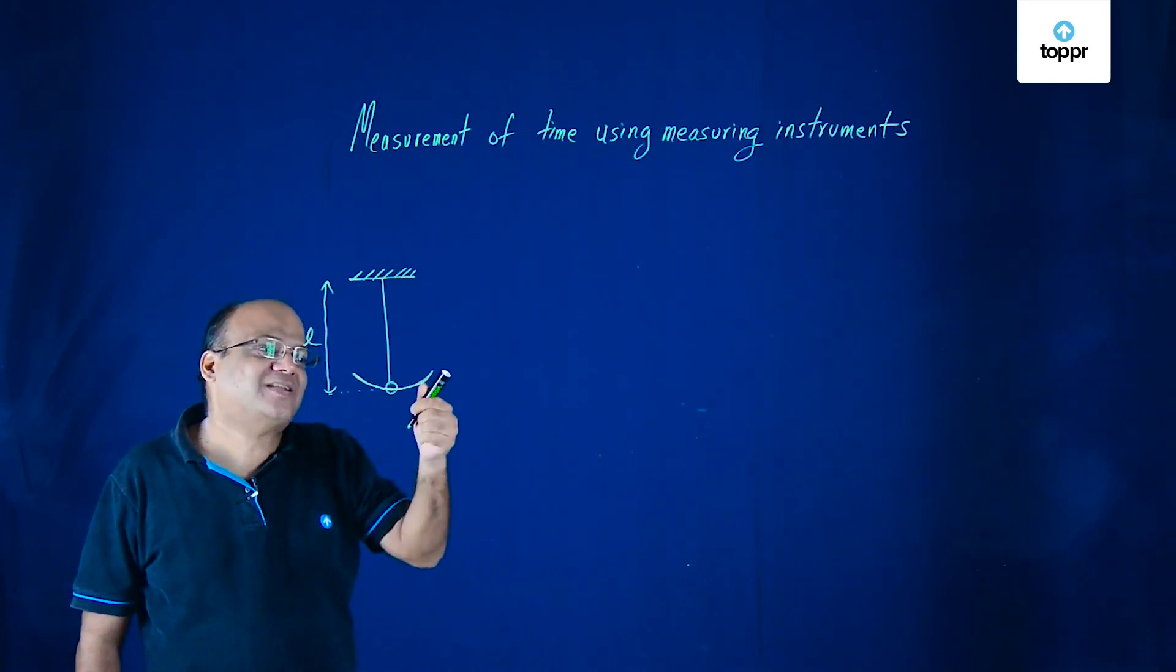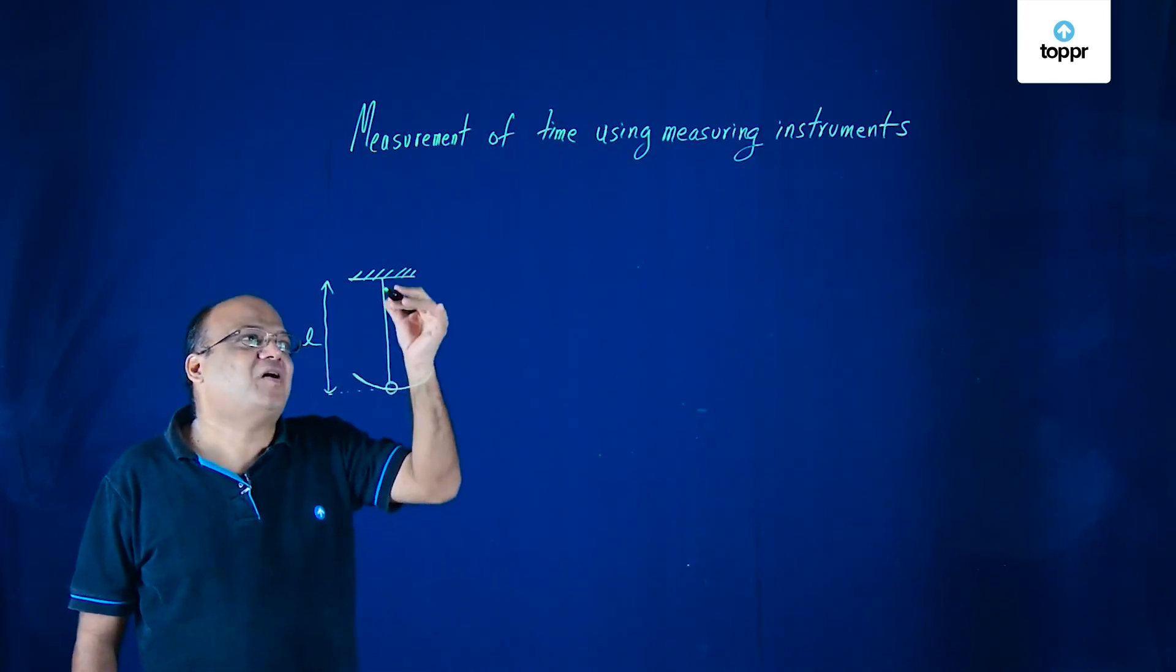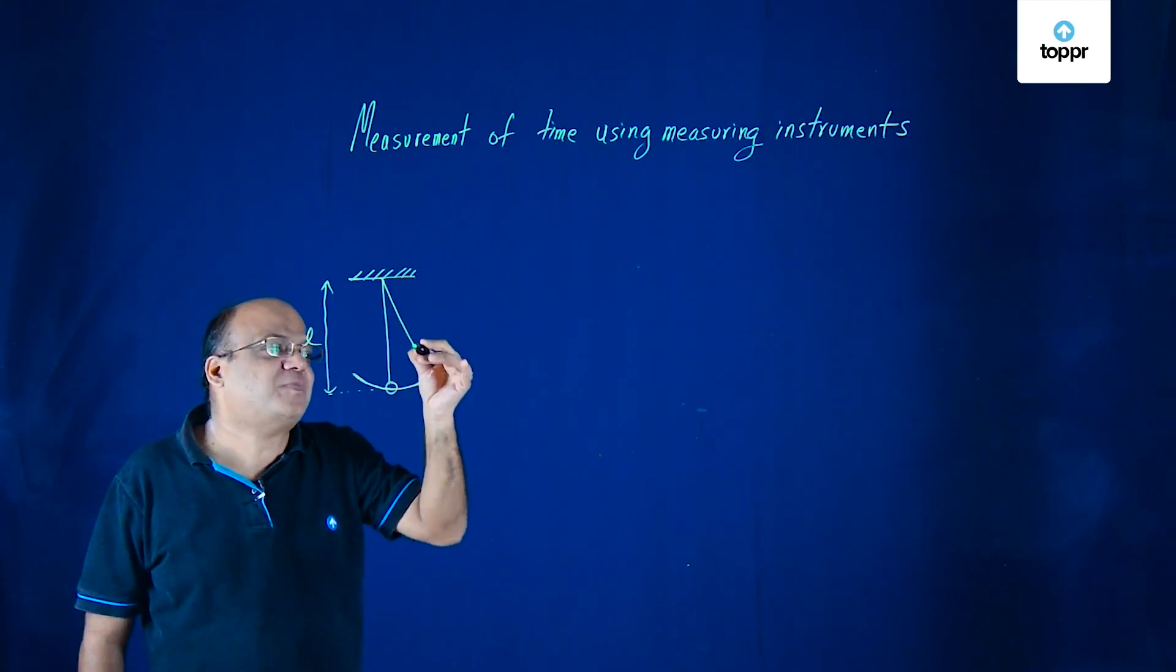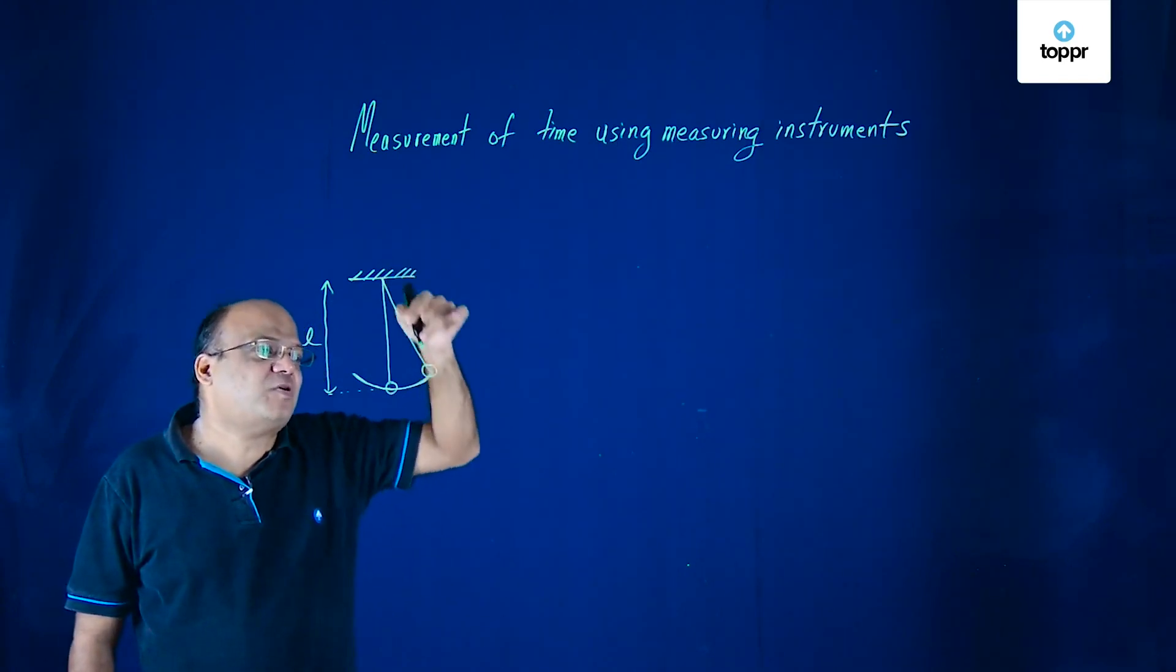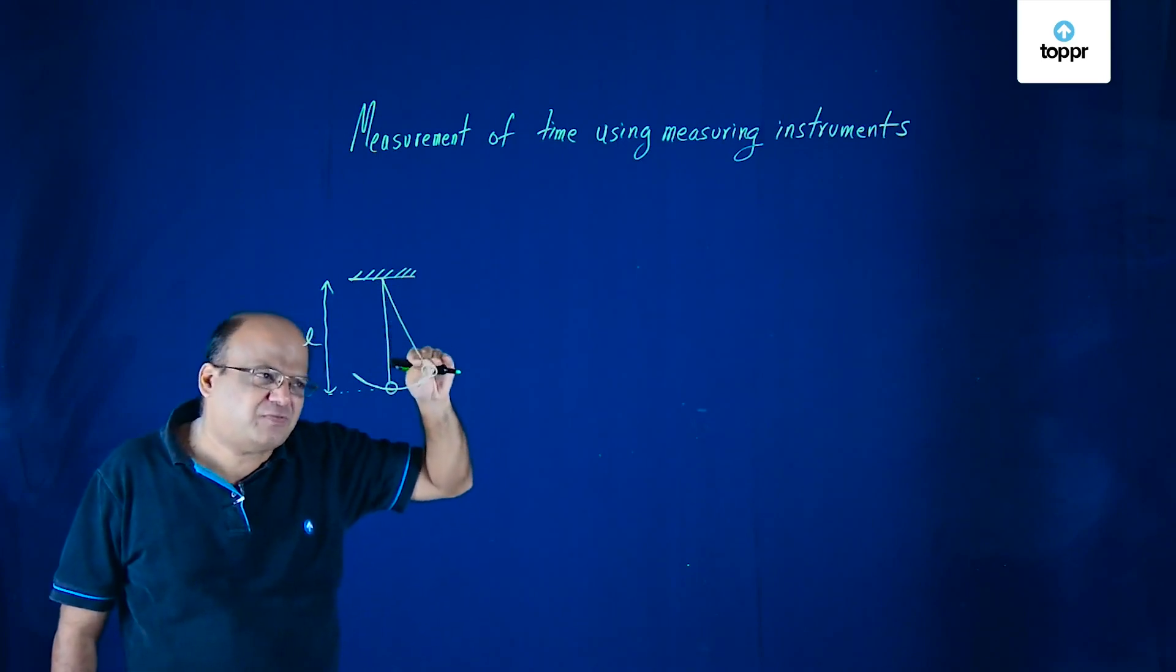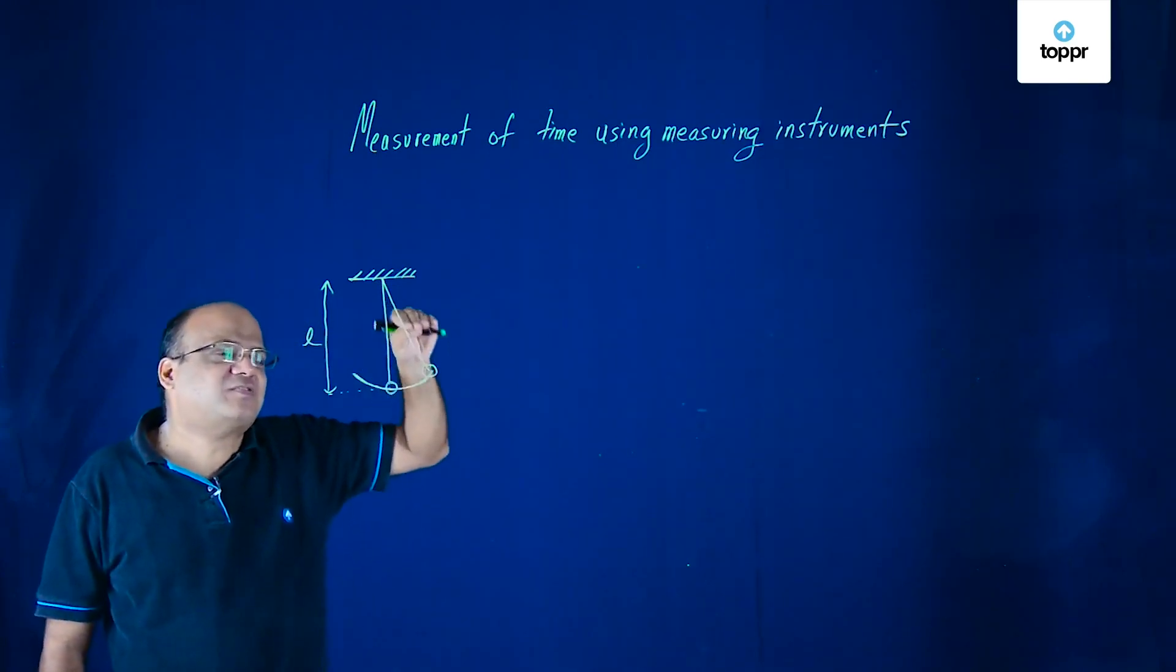Start from here, go there, come back here. So how this works: basically when the bob is here its weight is acting down, one component of weight acts this way that gives it a torque about this point. Torque is the turning effect of a force and this oscillates to and fro.